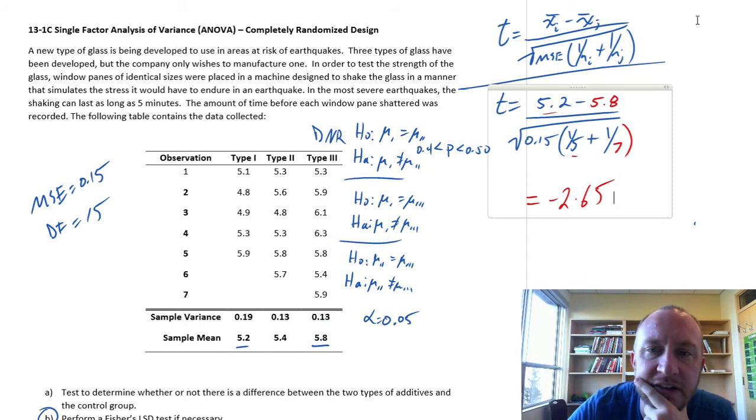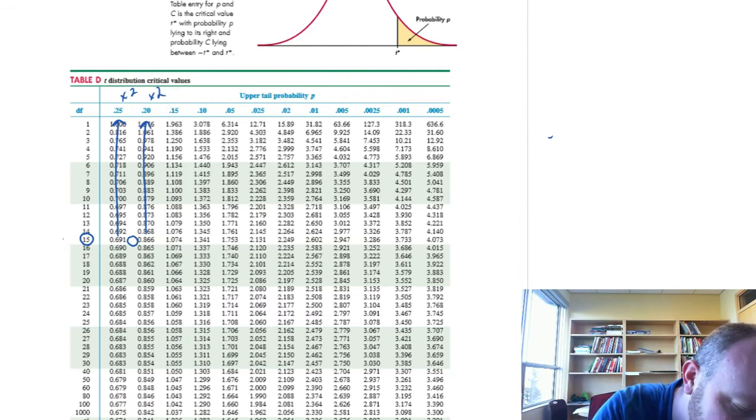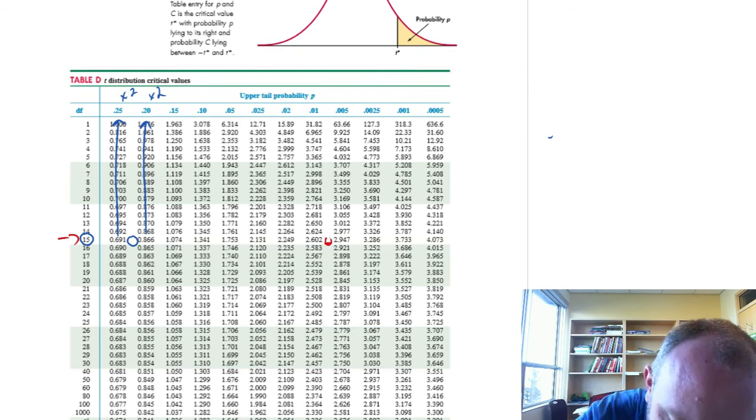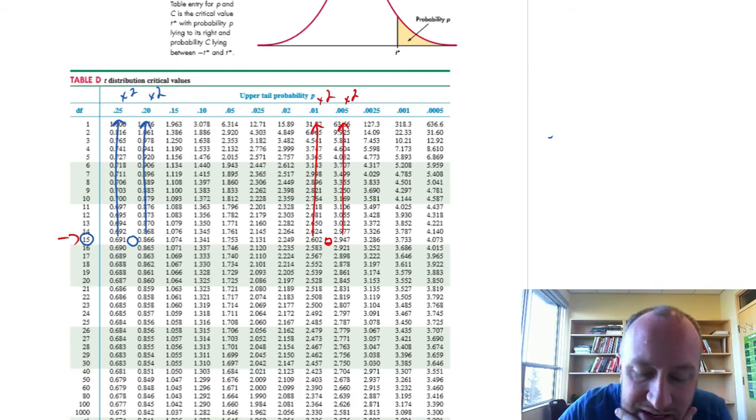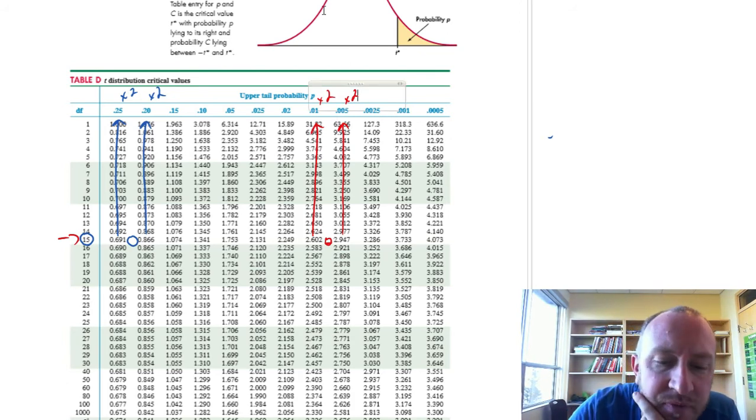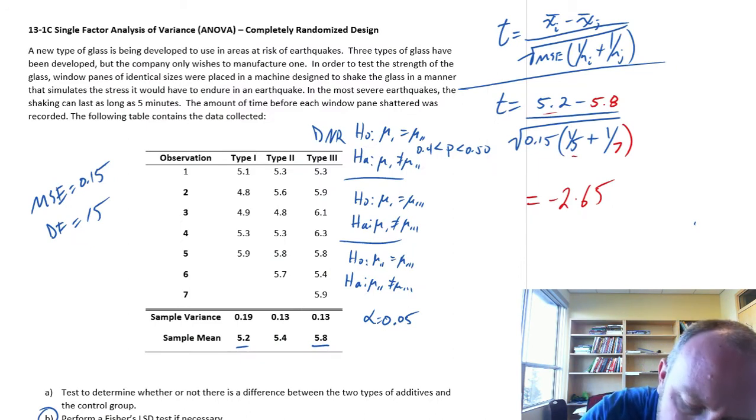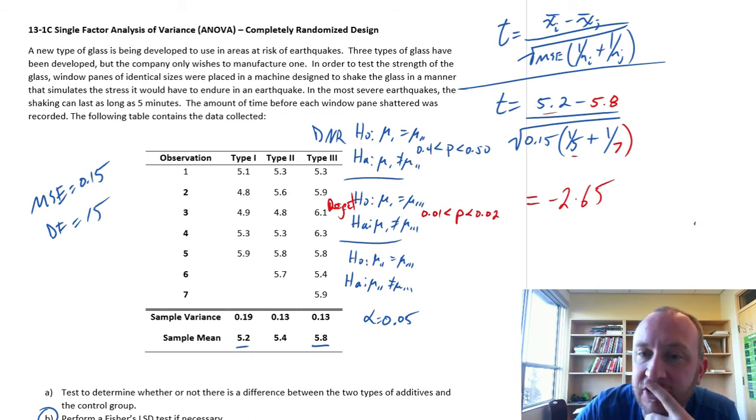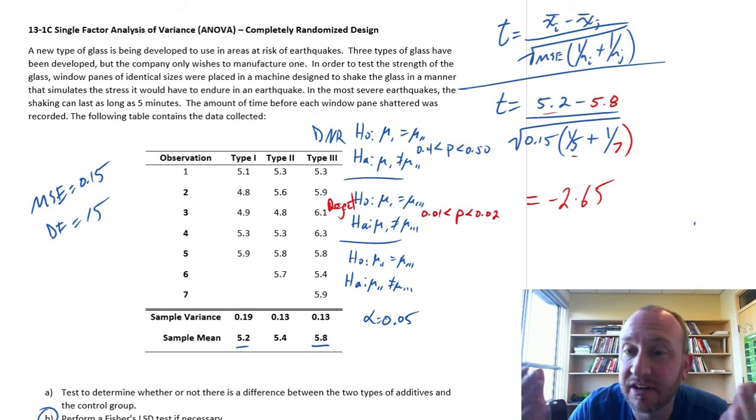Okay, so there's our test statistic for the second one. We can go to that t-distribution. Still 15 degrees of freedom, 2.65. So that's out here somewhere between these two. So now these are our relevant probabilities. Two-tailed test times those by two. So our p-value now is between 0.01 and 0.02. So p-value for this one is less than 0.02 greater than 0.01. So this one we can quite comfortably reject. So one and three, I have evidence to show that populations one and three are different.